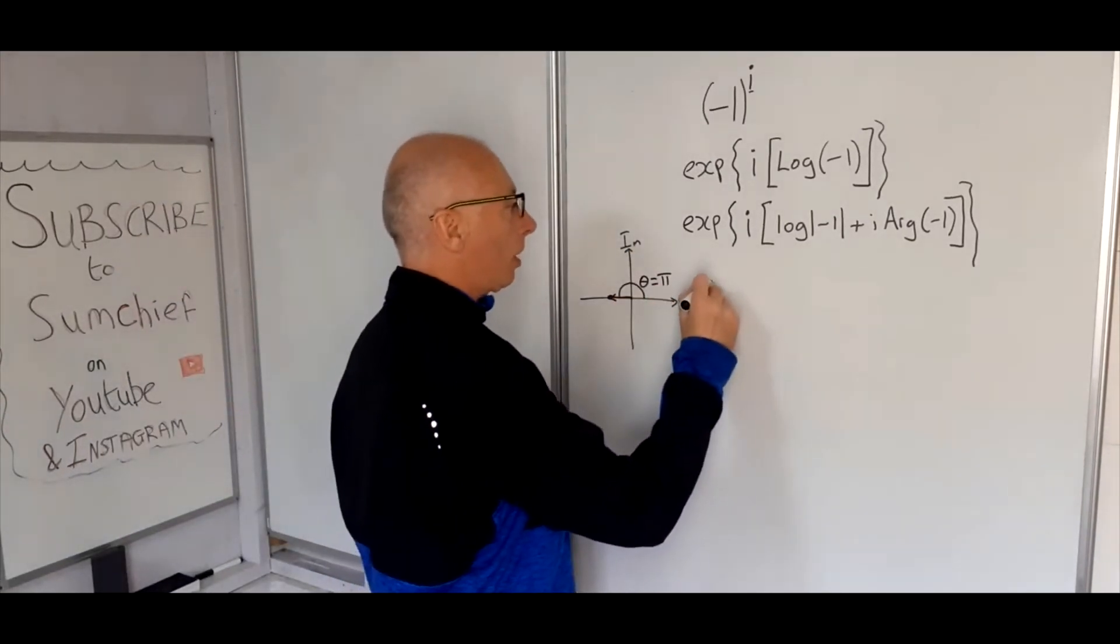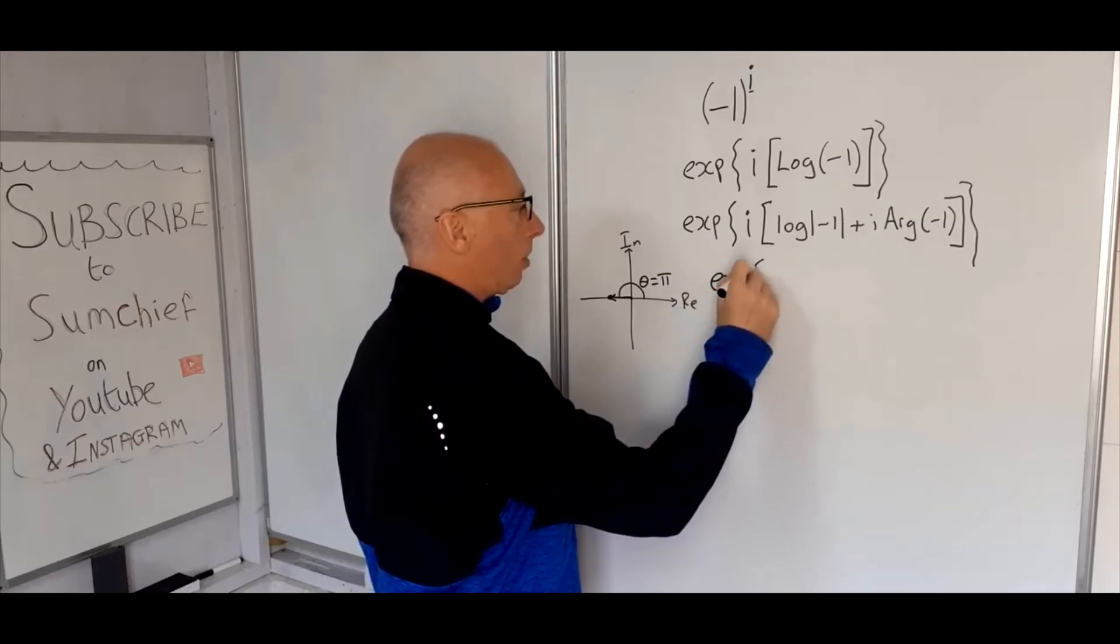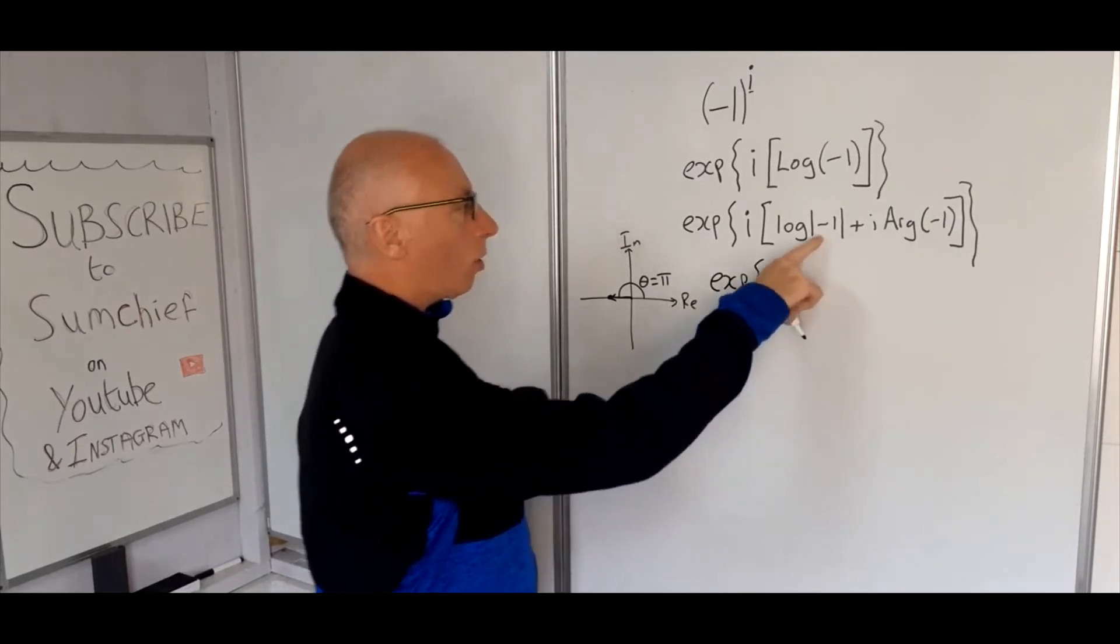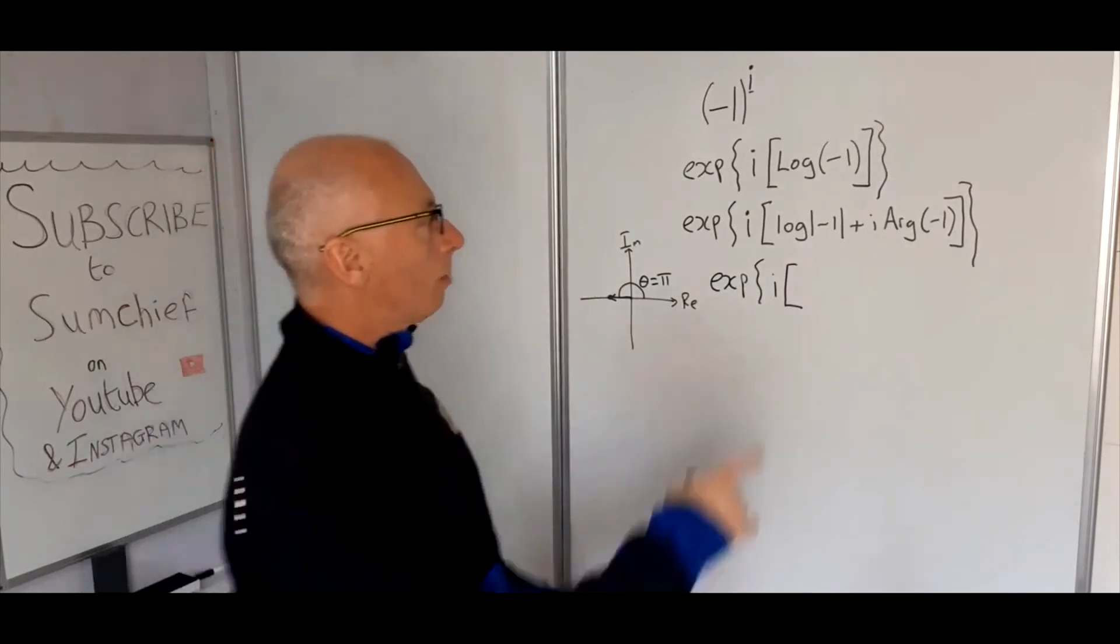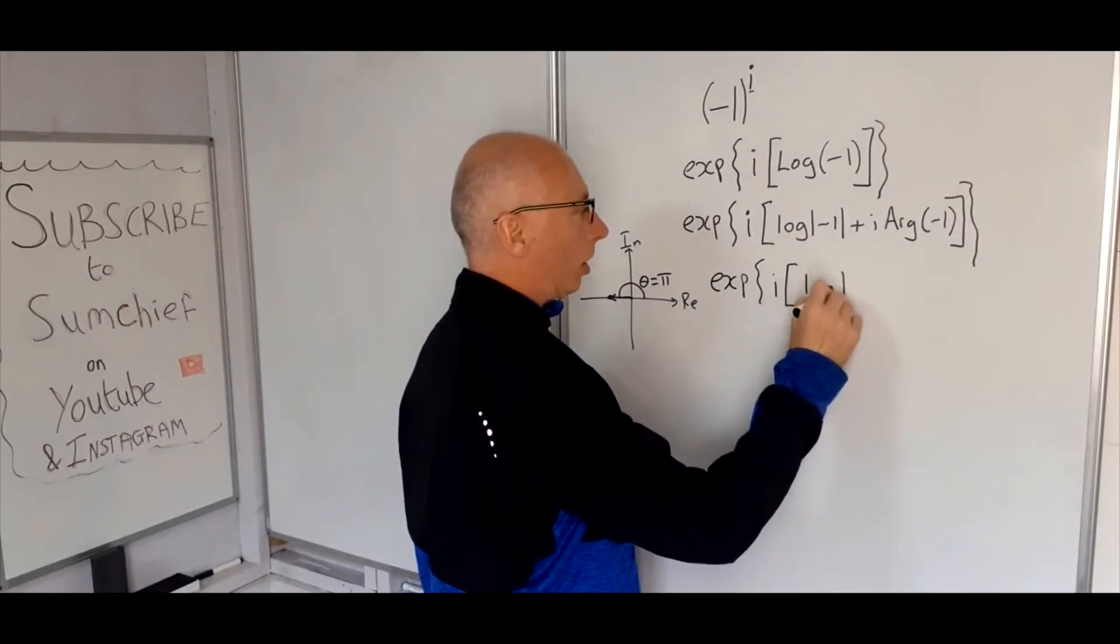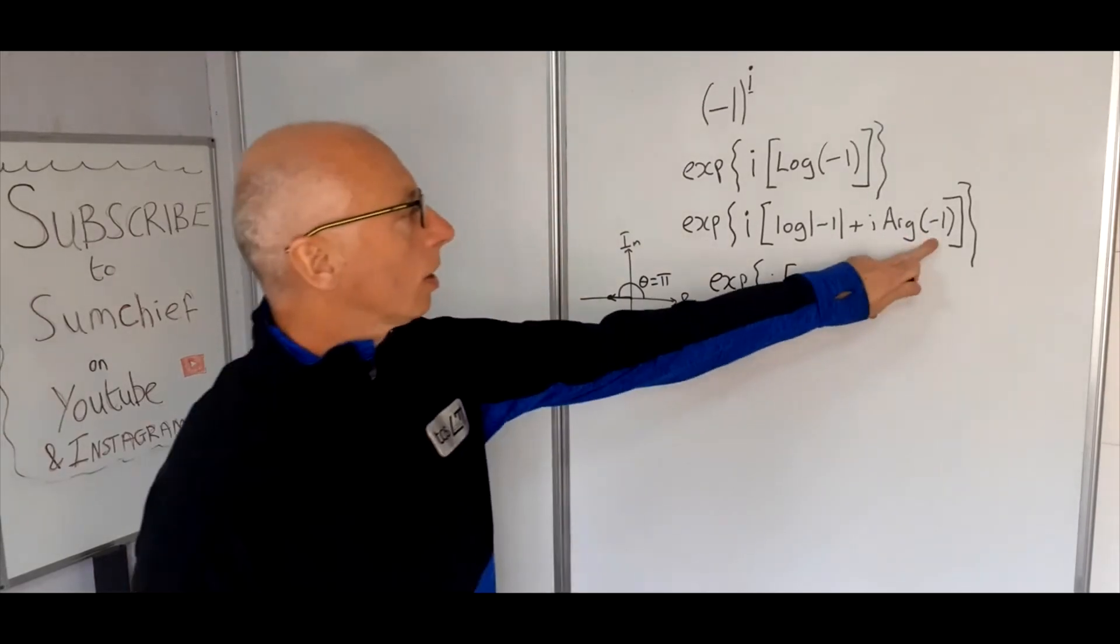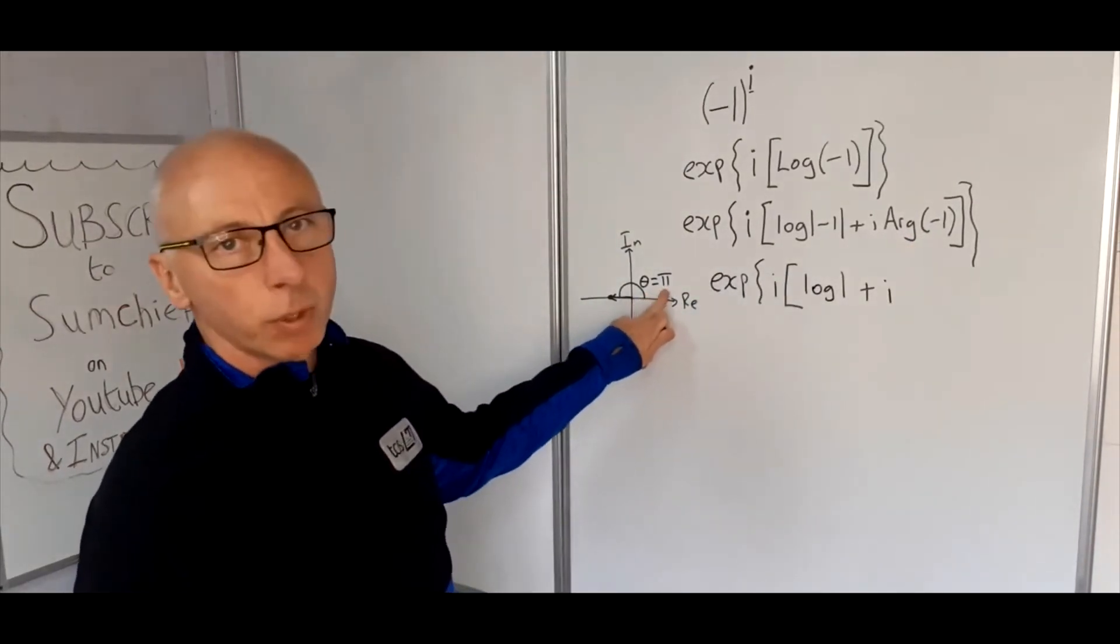So we can expand further on this. So exponential of i times log one, that's what that is, that modulus of minus one is just log one, plus i times the argument of minus one. So we just put in a pi there.